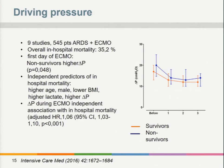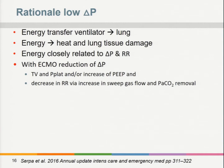The rationale for using low driving pressure relates to mechanical power. The ventilator produces energy that is transferred to the lung with each breath, causing energy dissipation — generating heat and even lung tissue damage. This is related to both driving pressure and respiratory rate. With ECMO, it is possible to reduce driving pressure by limiting tidal volume and plateau pressure while increasing PEEP, and to decrease respiratory rate by increasing sweep gas flow.